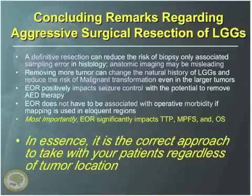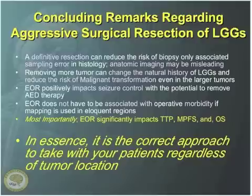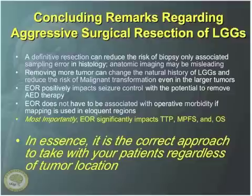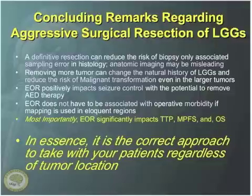The take-home message: a definitive resection can reduce the risk of sampling error; anatomic imaging can be misleading; we can change the natural history of the disease by reducing malignant transformation; we can impact seizure control if we deal with the tumor early on; and extensive resection doesn't have to be associated with morbidity. Most importantly, extent of resection significantly impacts time to tumor progression, malignant transformation, and overall survival. Thank you.